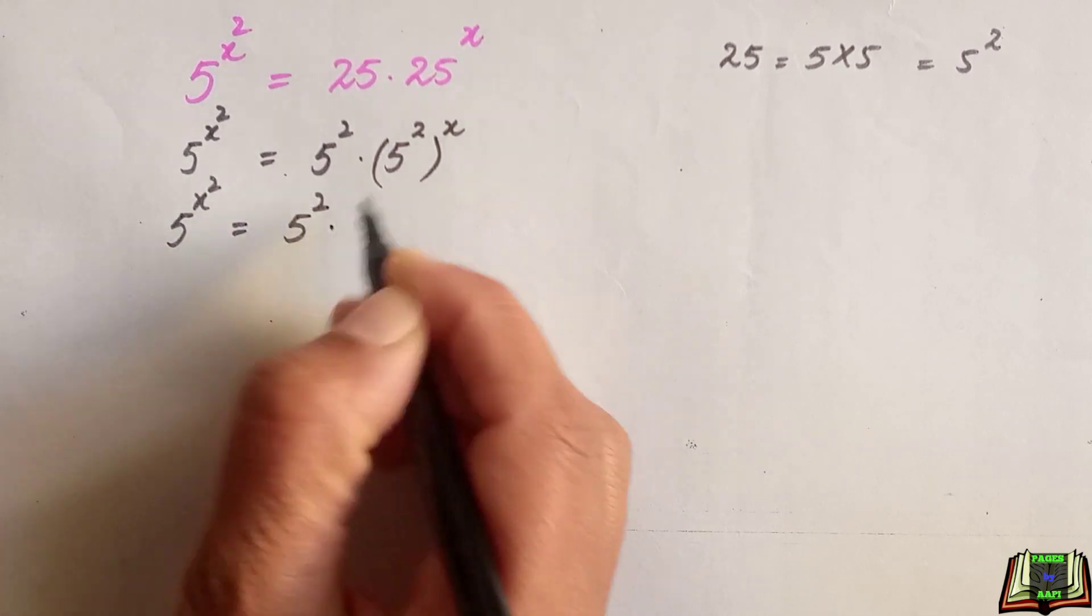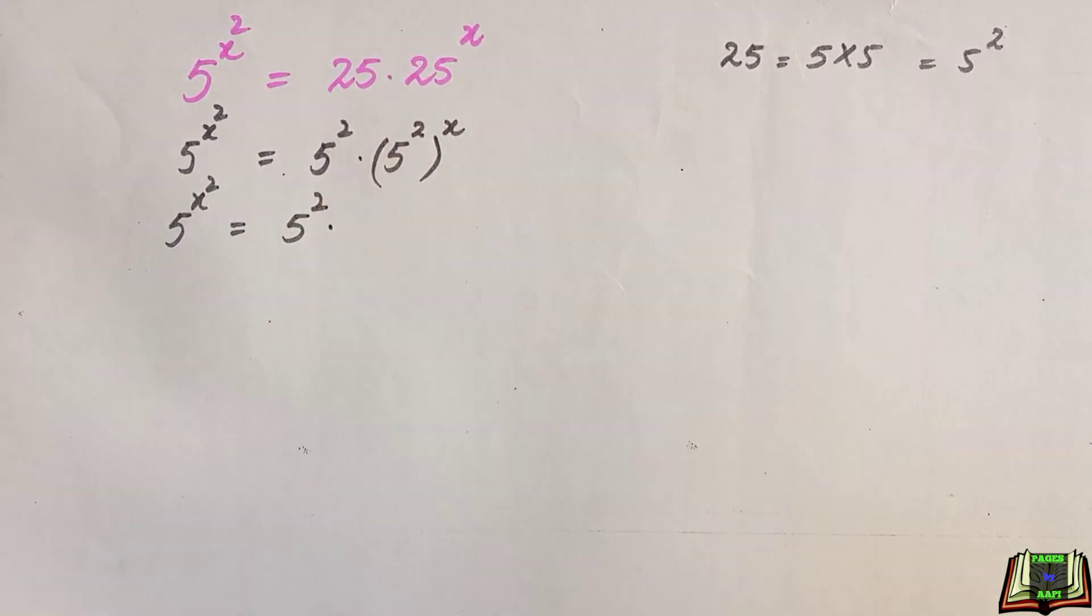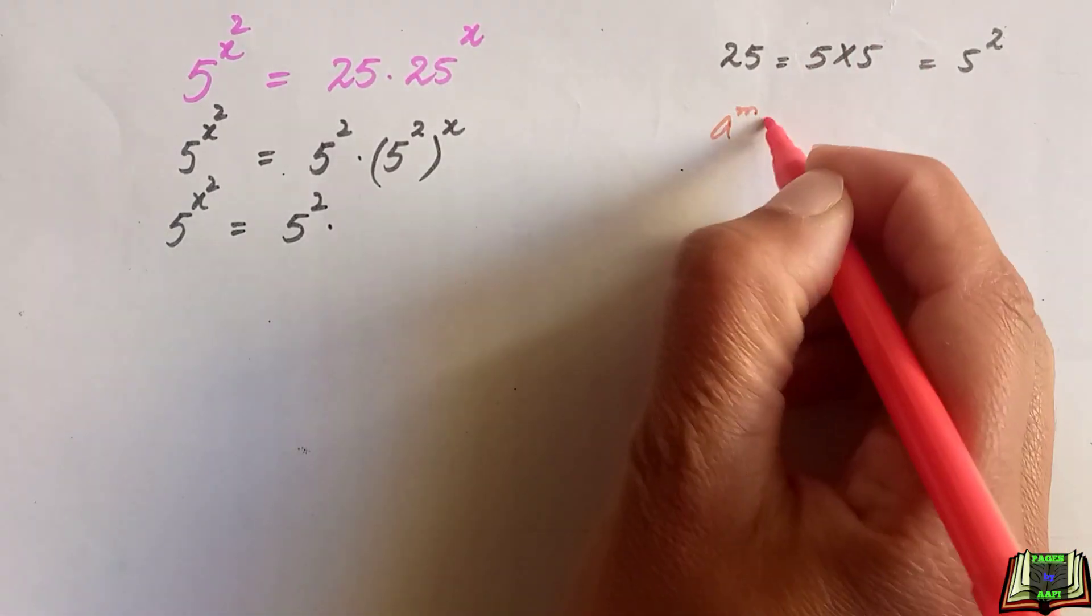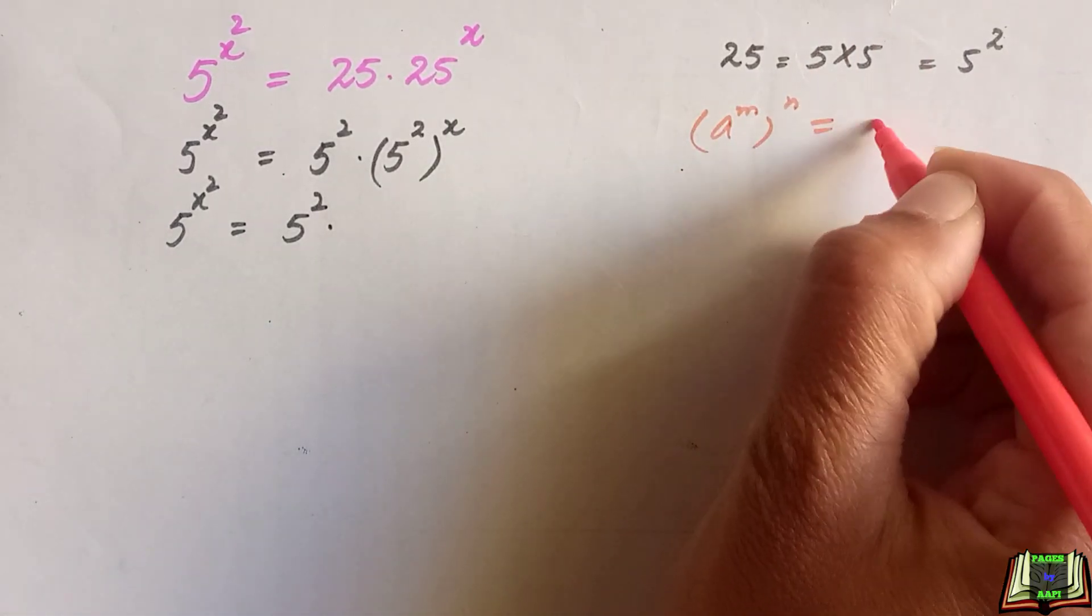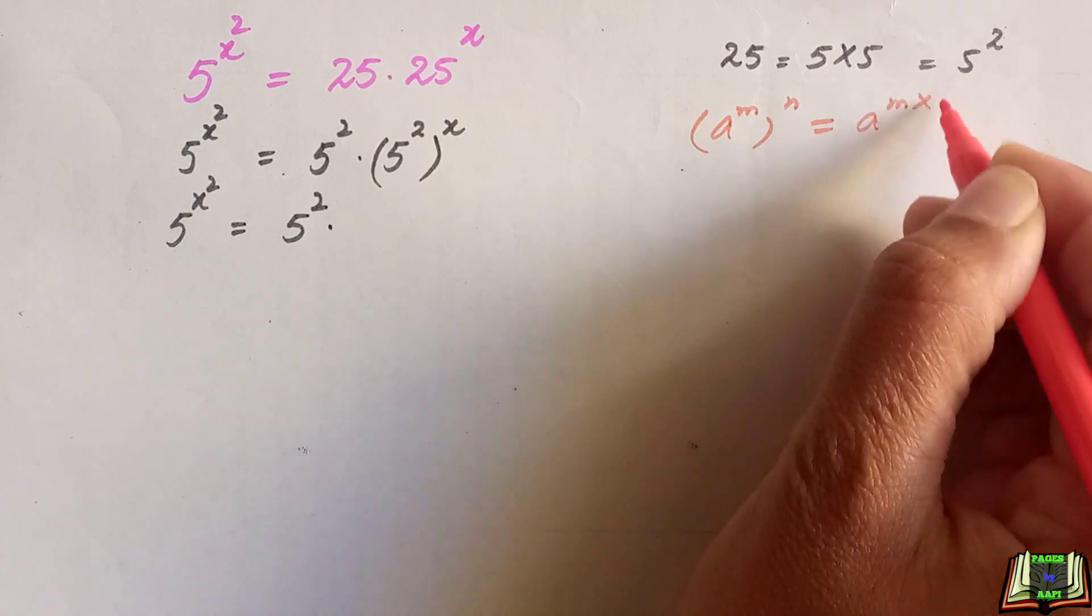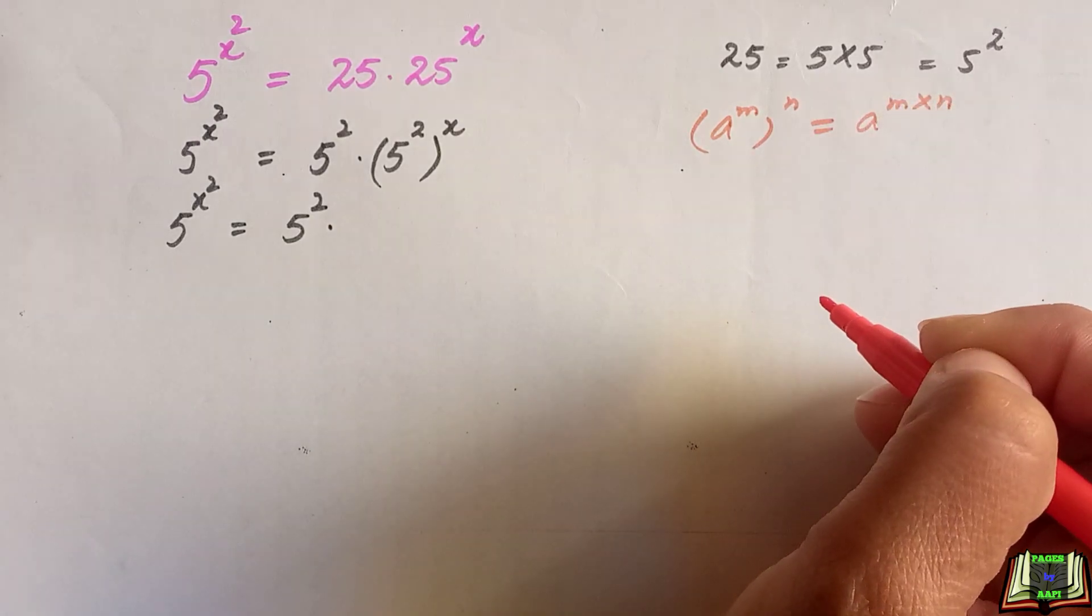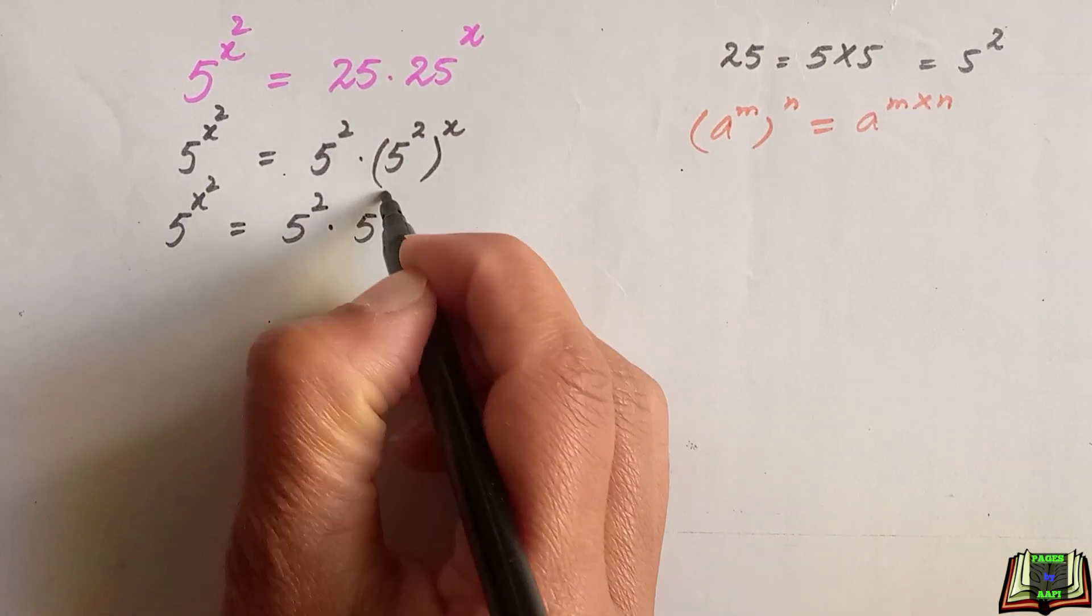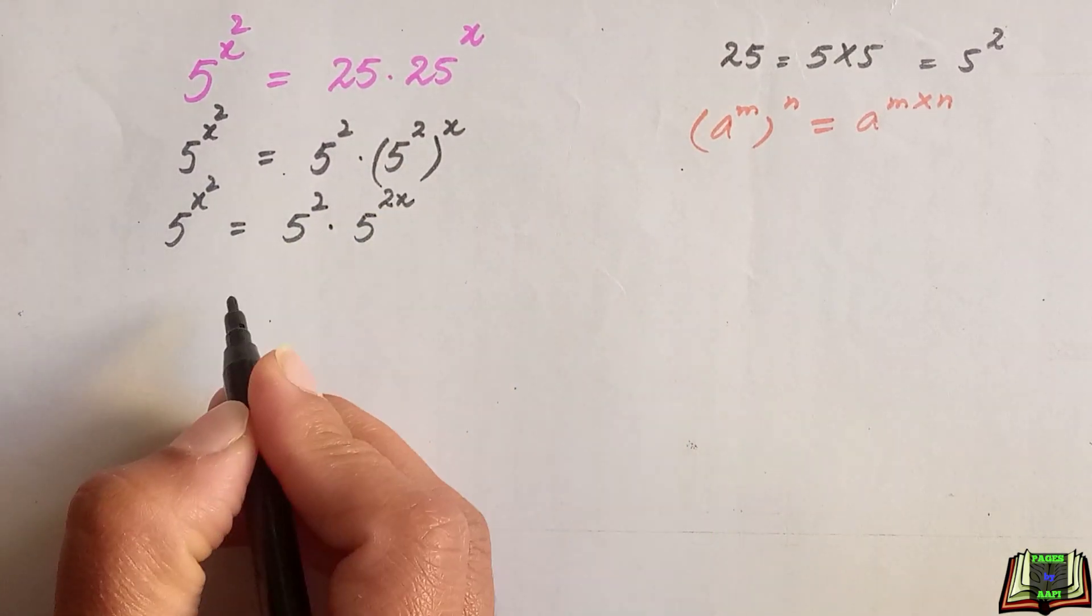5 raised to power 2 and here we are going to multiply these two powers using power of a power rule that says if a raised to power m raised to power n, this is equal to a raised to power m times n. So after multiplying these two powers, 5 raised to power 2 times x is 2x.